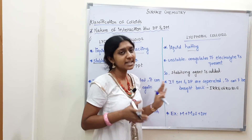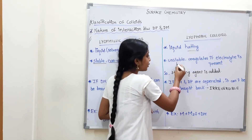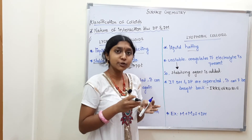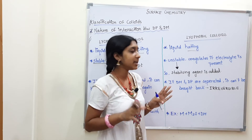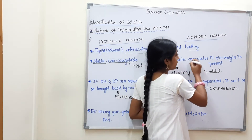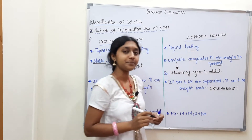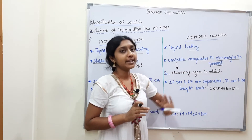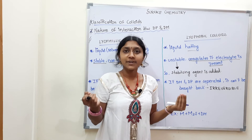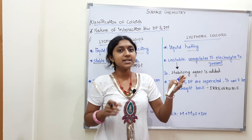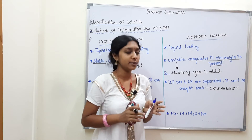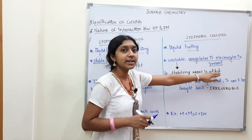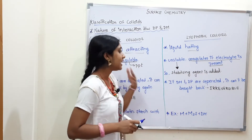Lyophobic colloids are unstable. A stabilizing agent must be added to make them stable. Without a stabilizing agent, they are unstable and will coagulate. Coagulation occurs when an electrolyte is present. The best example of an electrolyte is common salt, NaCl. So lyophilic is stable and non-coagulable, while lyophobic is unstable and coagulates only if an electrolyte is present.